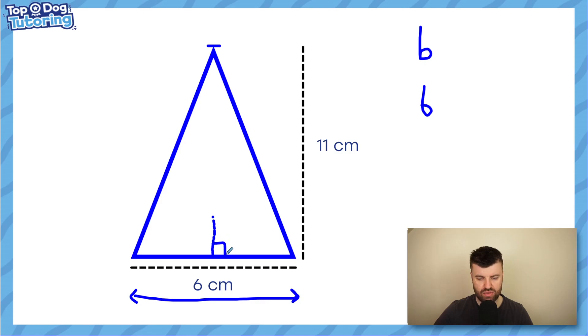That means at a right angle to the base. This line going directly up is the height, which we can write as H, or in this case, 11 centimeters.